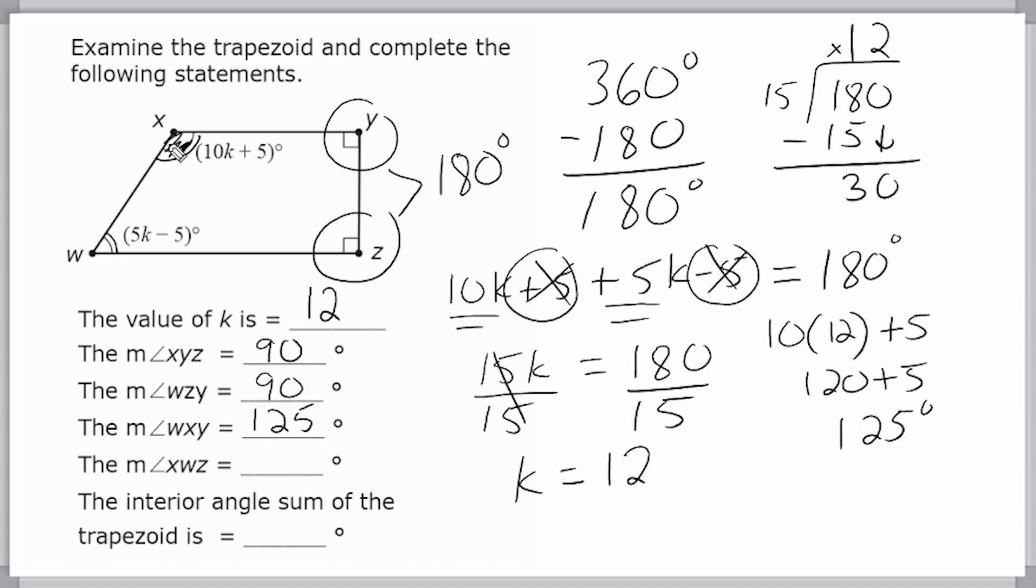Now, we know from earlier that these two angles are supplementary. So this angle here, xwz, will be added to 125 to make 180, and that would give us a total of 55 degrees. Now, if we add all four of these interior angles together, that would give us a total of 360 degrees.